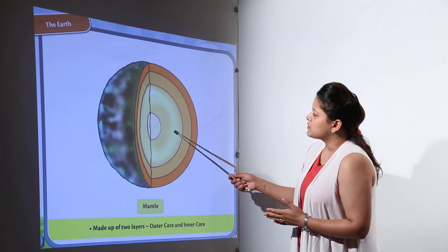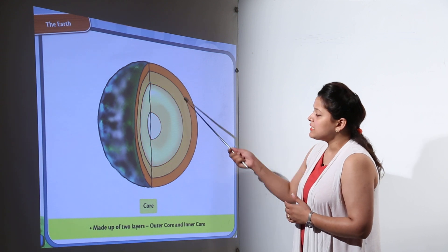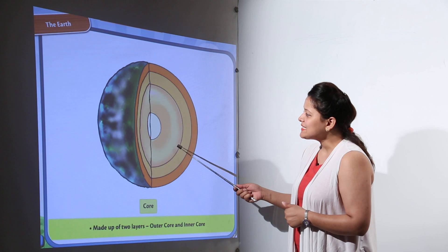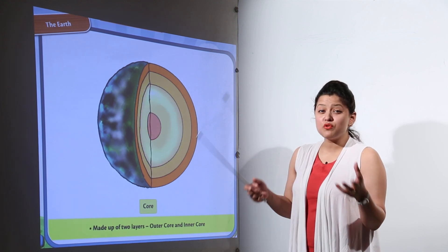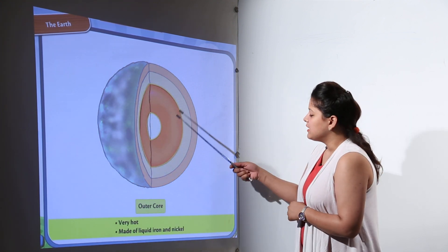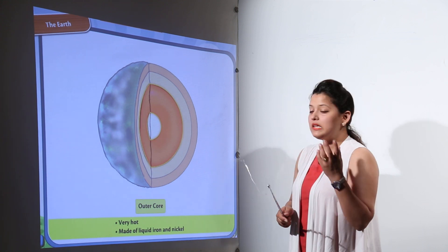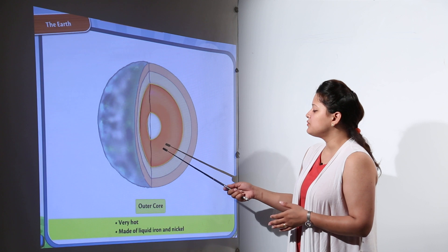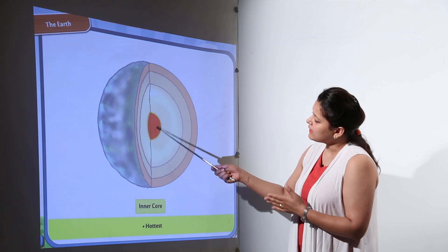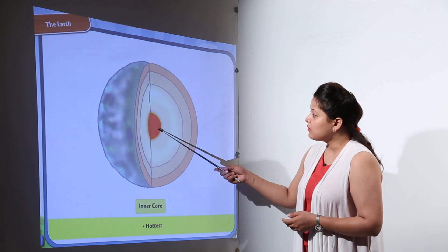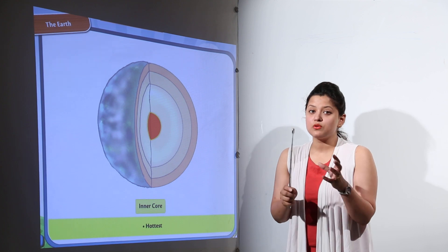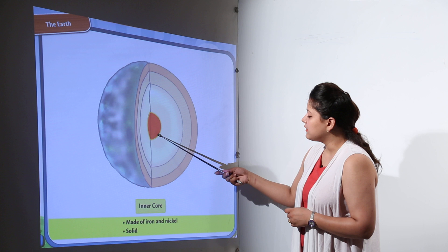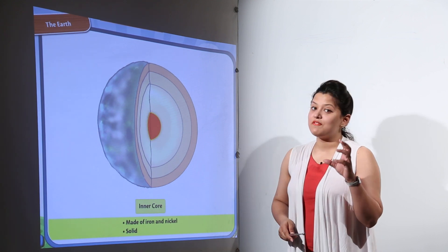Coming to the next one, that is the innermost layer of the Earth, the core. Now the core is consisting of so much hotness and temperature. This is due to the liquid that are present. So the core is divided again into two parts: the outer core and the inner core. Now the inner core is the hottest part of the Earth planet. This is made up of iron and nickel and it is very solid.